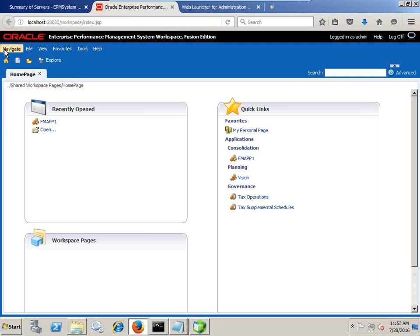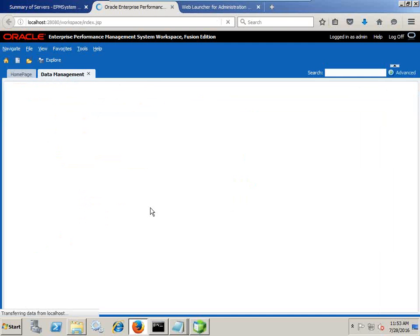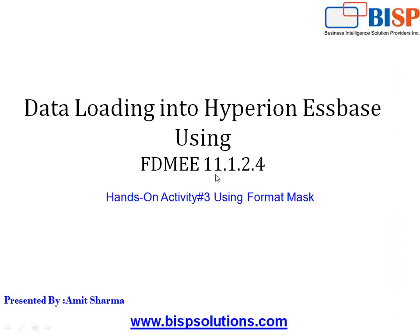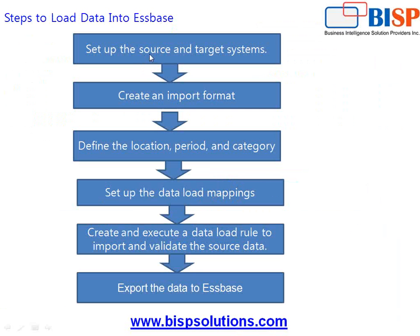Let's do the same thing. First, we start our data management tool called FDME, and then we have two tabs: Setup and Workflow. The Setup tab is required to be configured only once — we need to define our source and target application. There are six steps to follow as discussed in the previous session: first, set up a source and target system; then define an import format; then define location, time, period, and scenario (called category); then define your data load mapping with source-to-target mapping; and finally create and execute a data load rule file. Data first goes to the staging table, then to the target application, and then exports to the Essbase cube.